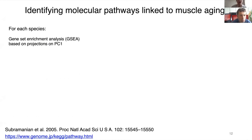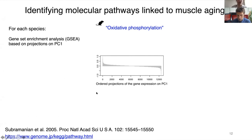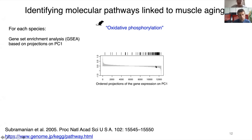Next, I identified molecular pathways underlying muscle aging by performing gene set enrichment analysis based on projections onto principal component one for all organisms. I obtained the list of all pathways and associated genes from the KEGG database, ordered all genes by their projection on PC1 from highest to lowest, and checked the distribution of genes annotated to each pathway in that ordered list, calculating an enrichment score.